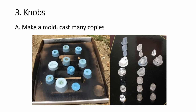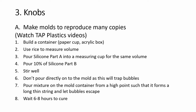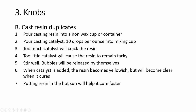For knobs, it can be quite expensive to buy them if your panel uses many of the same knob. You can buy one or 3D print one, then create a mold and pour resin to have many copies in a cheap way. You can watch the TAP Plastics video where they sell the mixture to build the mold, and then cast the resin following the steps.